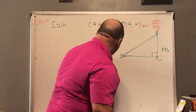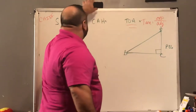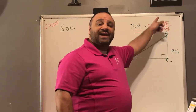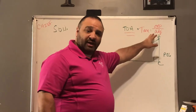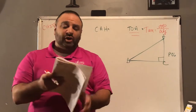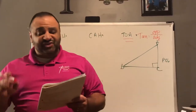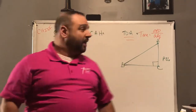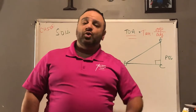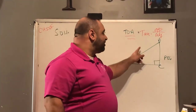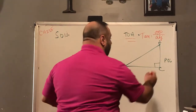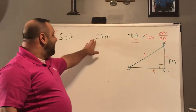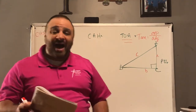So we've learned the tangent, which is the side opposite divided by the side adjacent. Now turn to page 35 and we're going to look at the sine and cosine ratios. The sine and cosine are different from the tangent ratio because the sine and cosine use the hypotenuse, whereas the tangent only uses the legs — sides A and B.